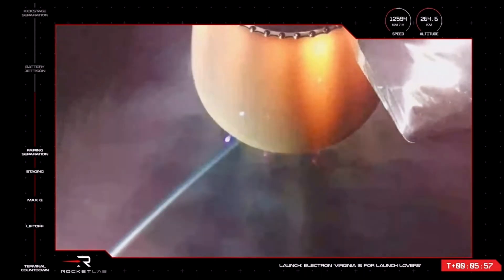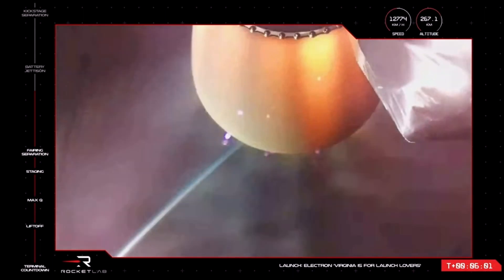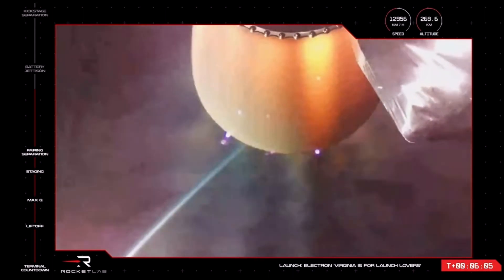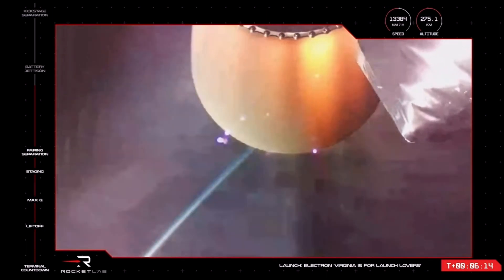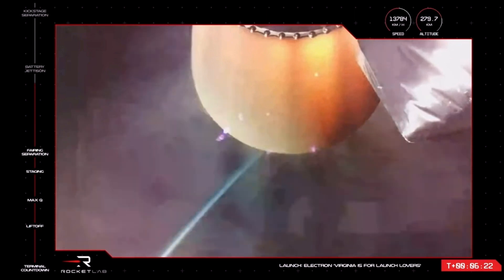We are coming up to our next event in the launch timeline, what we call the Battery Hot Swap. This occurs on the second stage of Electron for the Rutherford engine, which switches over to a new set of batteries to power its electric pumps once the first pair are almost out of energy. Once the swap is made, the old batteries fall away from Electron, and sometimes we see those shiny silver packs on the screen as they go. So let's keep our eyes on the screen and listen in for the call that Battery Hot Swap has occurred.